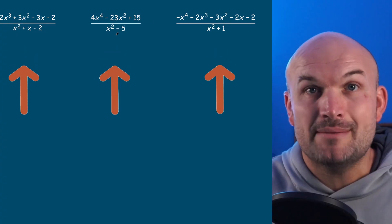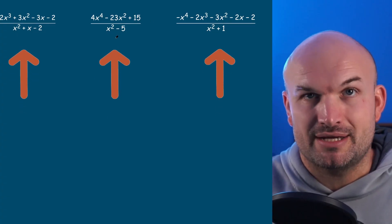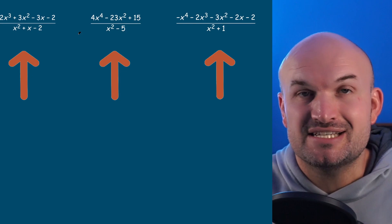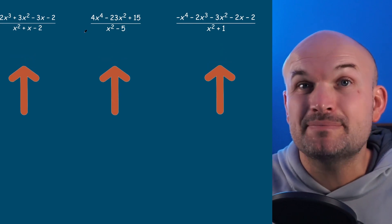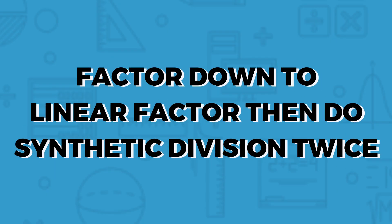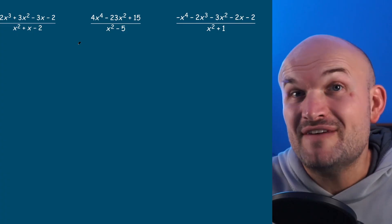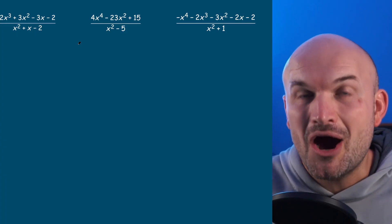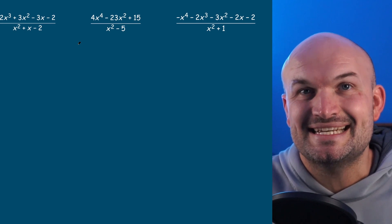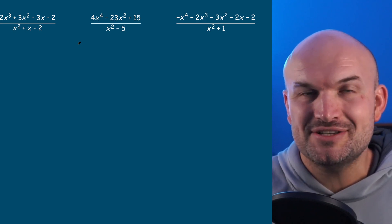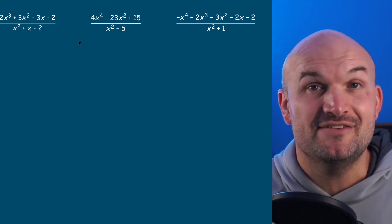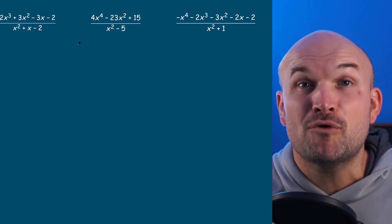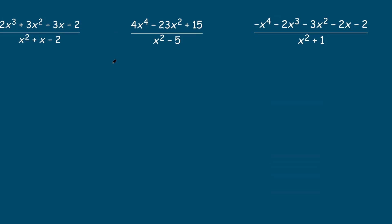You can see in these three examples my denominator is quadratic. To use synthetic division, all we simply need to do is factor them down to their linear factors and then do synthetic division twice. However, factoring down to linear factors is not always as easy as it sounds. So let's look at each of these examples individually first before we get into synthetic division.